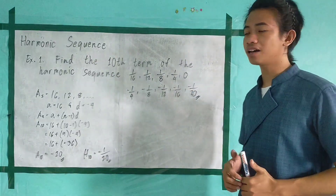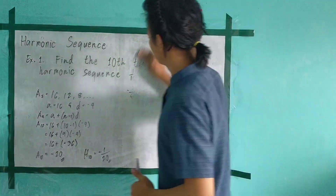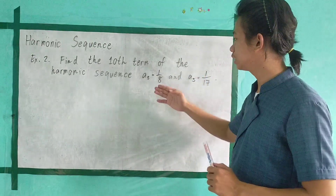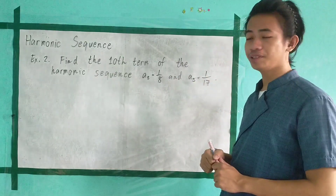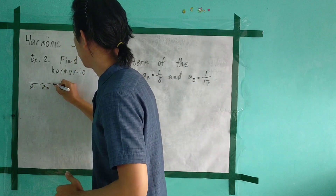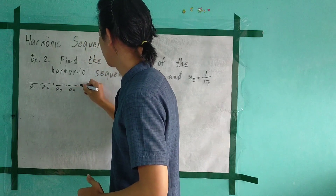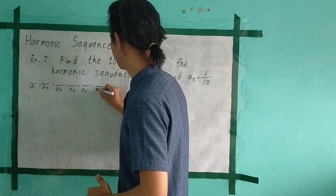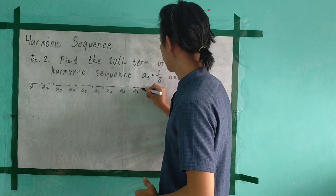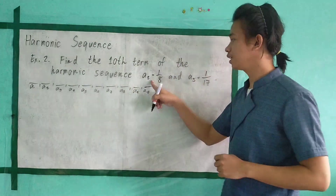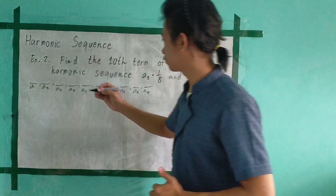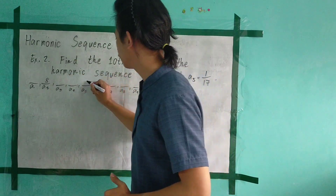Let's have another example. Example number 2: find the 10th term of the harmonic sequence given A sub 2 is equal to 1 over 8, and A sub 5 is equal to 1 over 17. We illustrate the positions A sub 1 through A sub 10. The given terms in the corresponding arithmetic sequence are: A sub 2 equals 8, and A sub 5 equals 17.